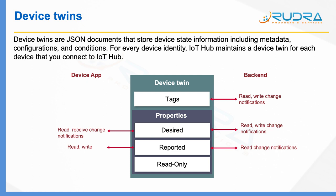The next most important thing is device twins. Device twins are JSON documents that store device state information including metadata, configurations, and conditions. For every device that is created in IoT Hub, a device identity will get created, and also IoT Hub maintains a device twin for each device that you connect to IoT Hub. You can imagine a device twin like a logical instance of your physical device in the field.